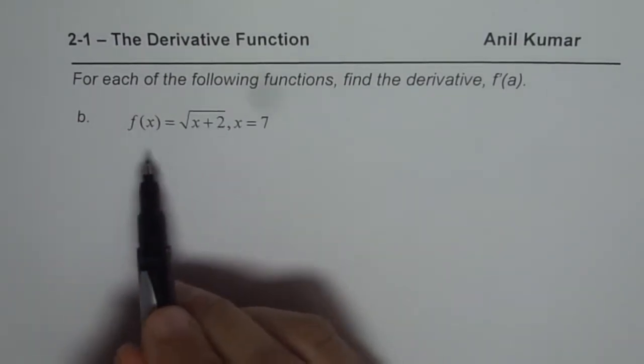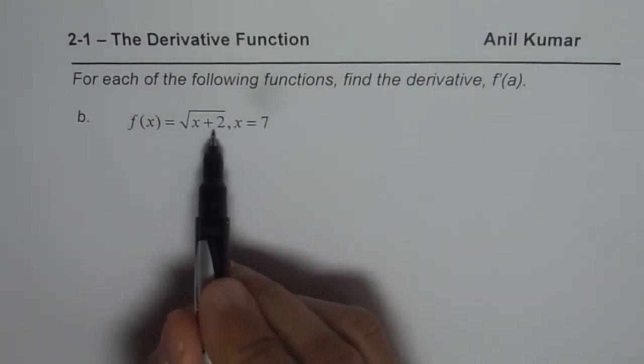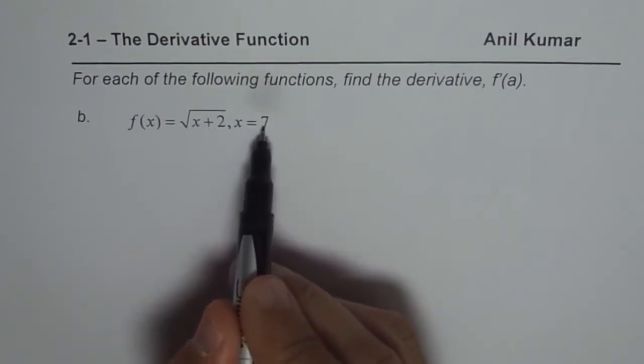The function is a square root function. f of x equals square root of x plus 2. You need to find the derivative at x equals 7.